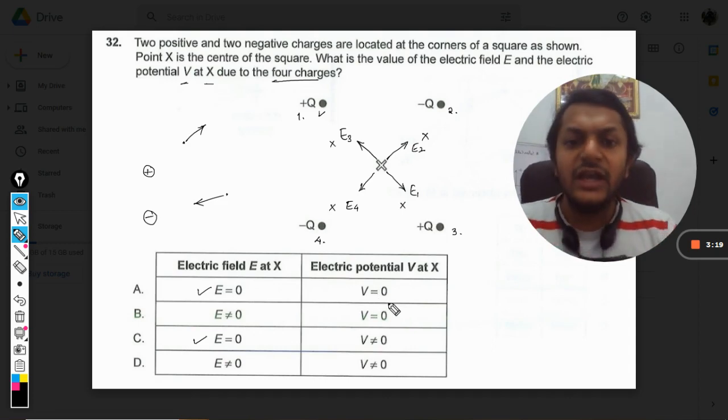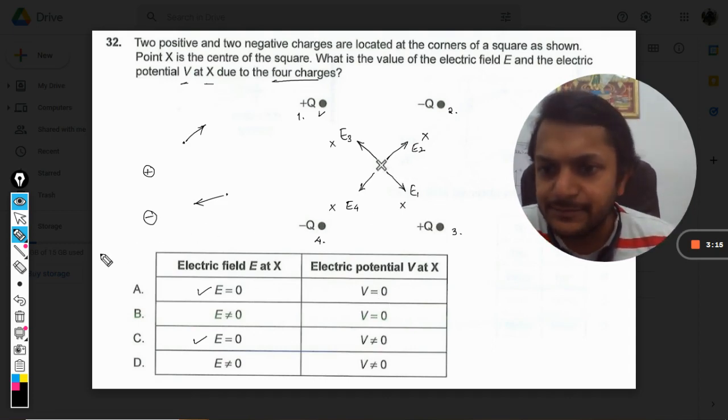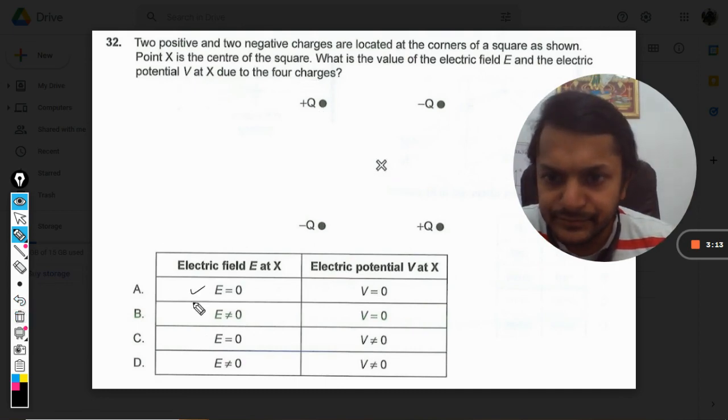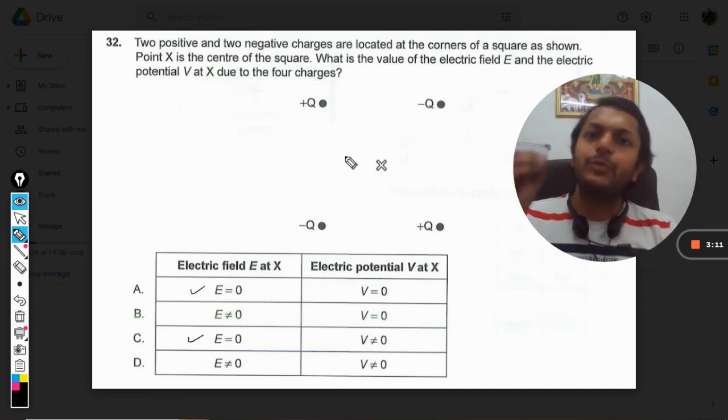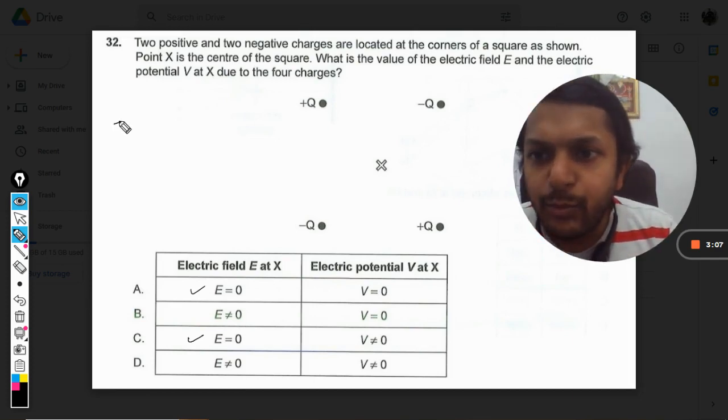So either it is A or it is C. Now we are talking about the electric potential at point X. So what will that be? Let us see. As far as the potential is concerned, we must be careful that positive charge will cast positive potential.